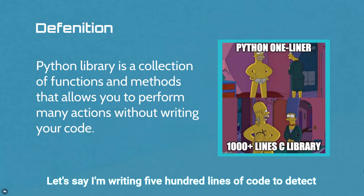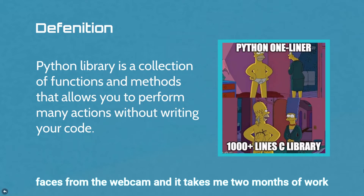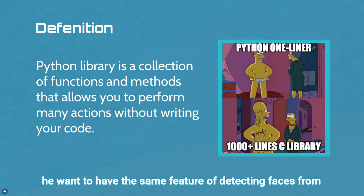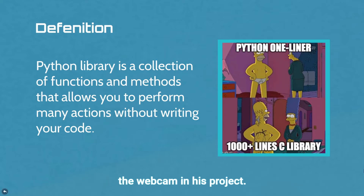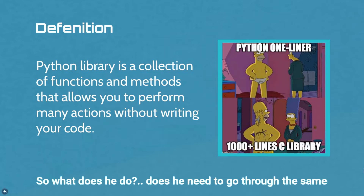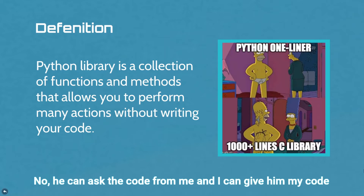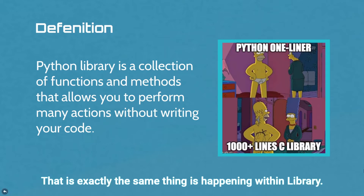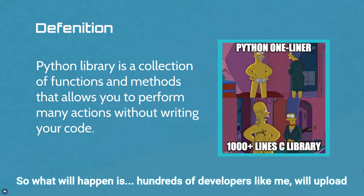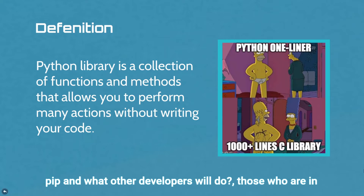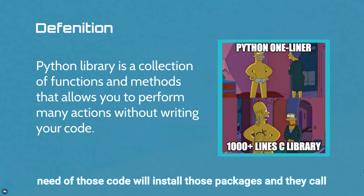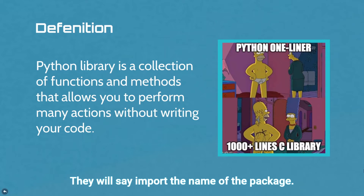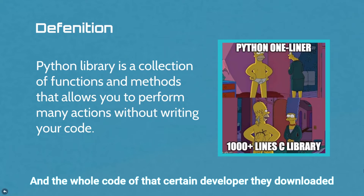To make it simpler, let's say I'm writing 500 lines of code to detect faces from the webcam, and it takes me two months of work to complete. If a friend wants the same feature in his project, does he need to go through the same two months of work? No. He can ask for my code and use it without any work. That is exactly what happens with a library. Hundreds of developers upload their code into Python's package manager, called pip, and other developers who need that code install those packages and call it in their Python file in a single line — just saying 'import' followed by the package name.